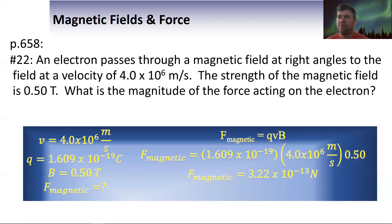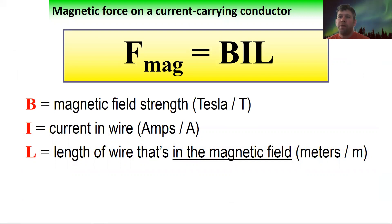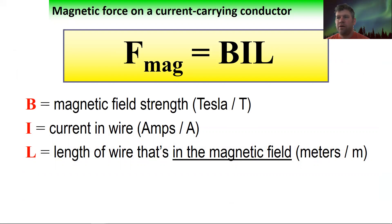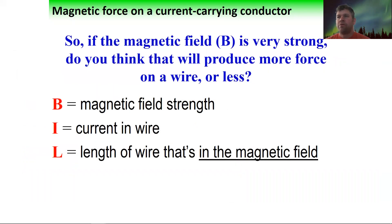Another formula: for a current-carrying conductor like a wire, we calculate the magnetic force as F = BIL. B is magnetic field strength in teslas, I is the current in the wire in amps, and L is the length of that wire in the magnetic field in meters. Watch out for unit conversions — maybe milliamps — but it'll likely be meters.